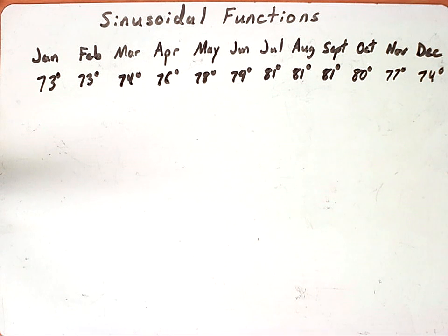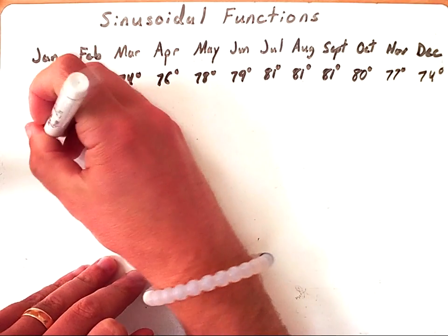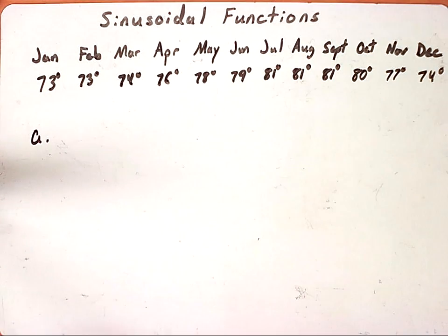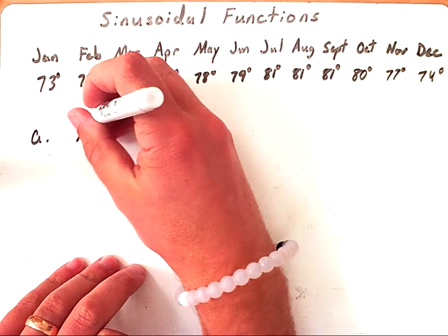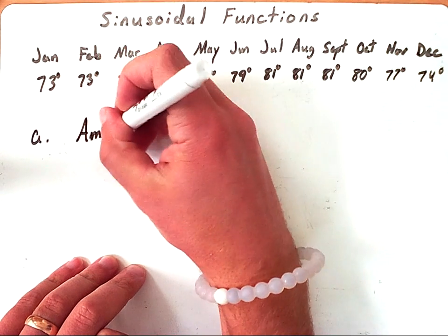Let's take a look at what we can do. The first thing we're going to need to figure out is the amplitude of our equation, the vertical shift if there is one, the period, and the phase shift. We need all these before we can write an equation. So the very first thing we'll do is we're going to find the amplitude for part A.